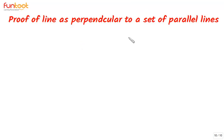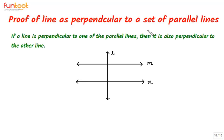Let's understand the proof of a line perpendicular to a set of parallel lines. The statement says: if we have two parallel lines M and N, and a line perpendicular to one of the given parallel lines, then this line is also perpendicular to the other parallel line. This is what we have to prove.